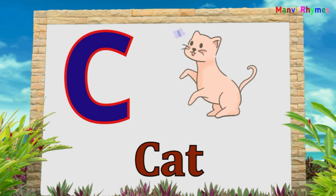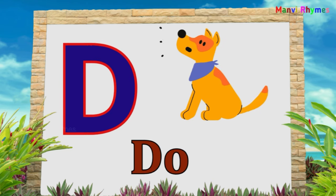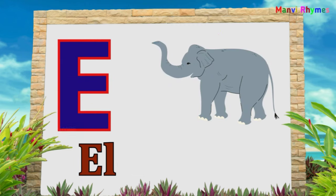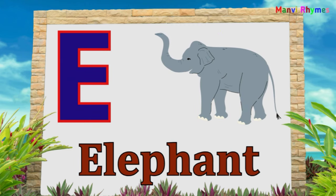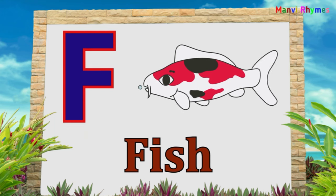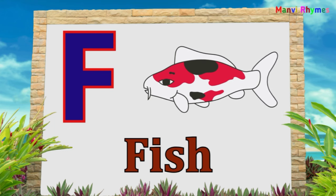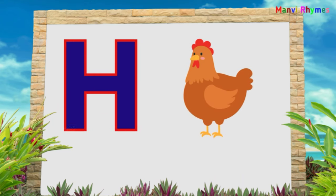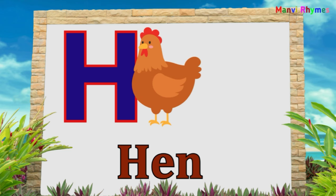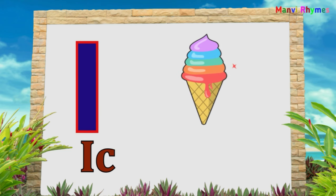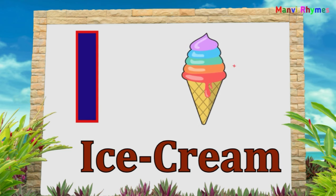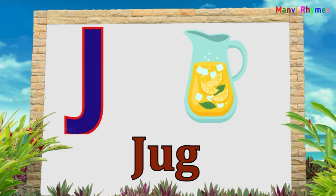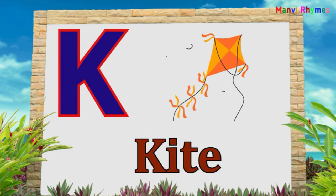C for Cat. D for Dog. E for Elephant. F for Fish. G for Grapes. H for Hen. I for Ice Cream. J for Jug. K for Kite.